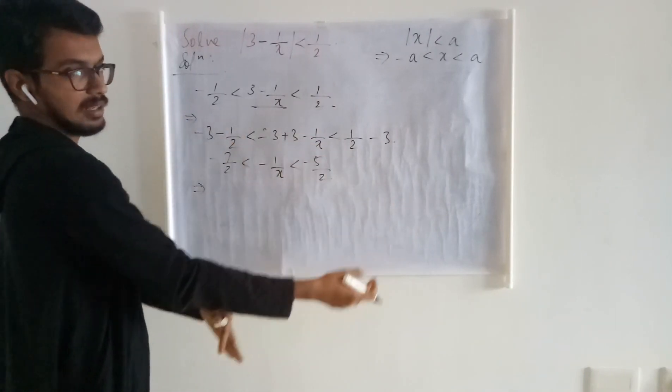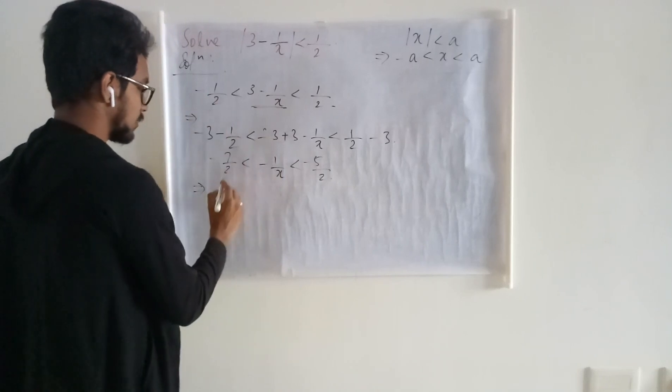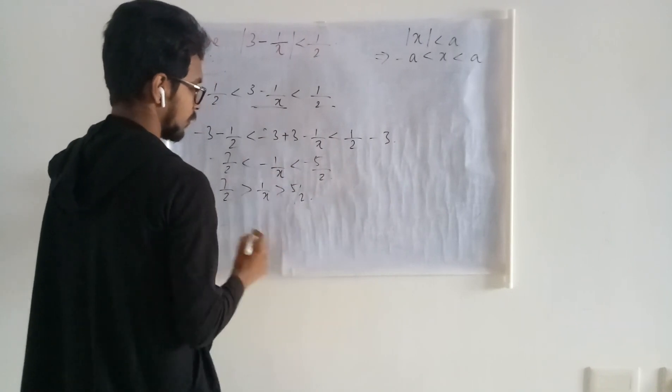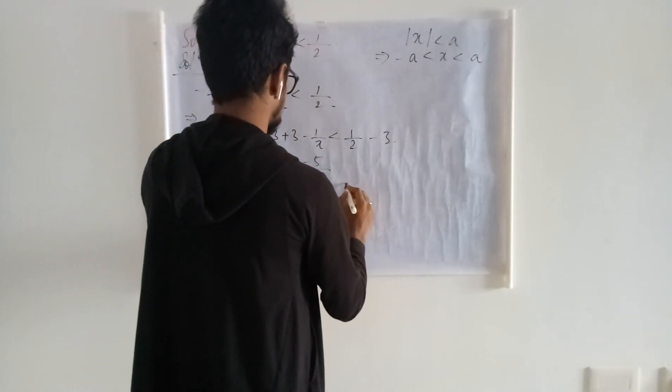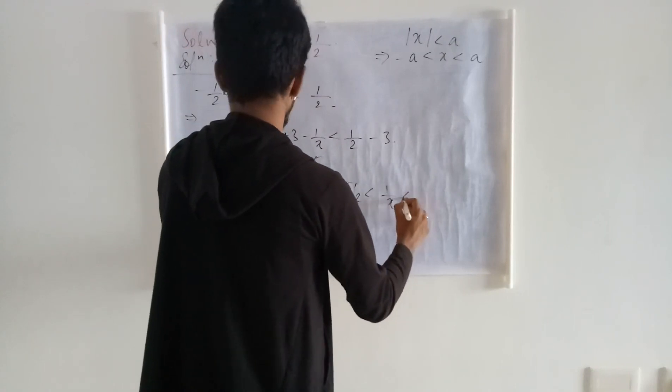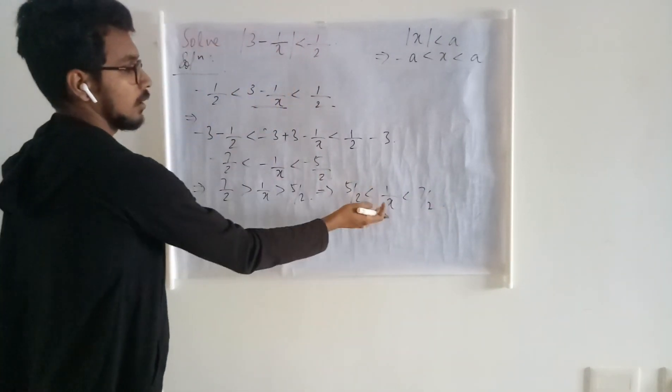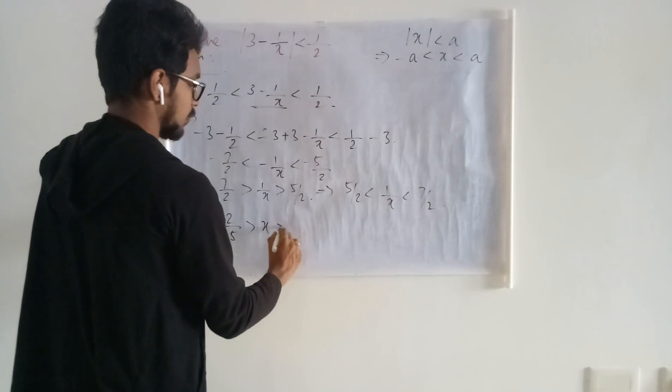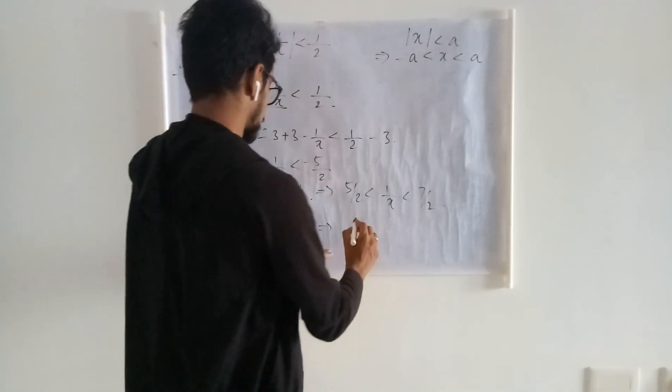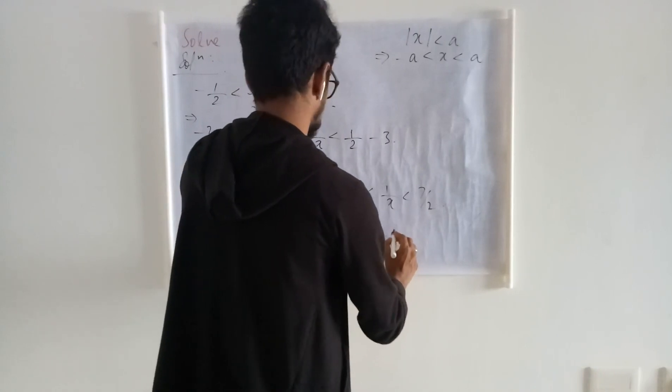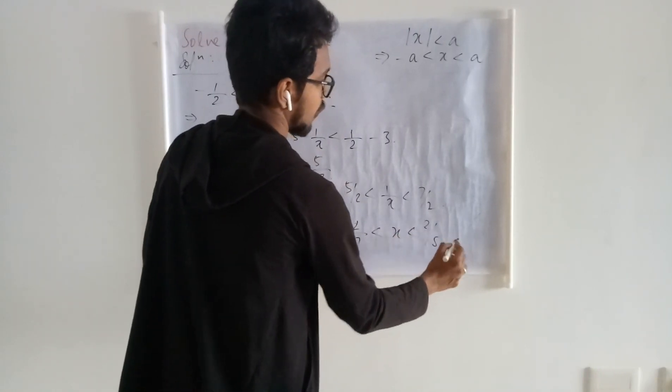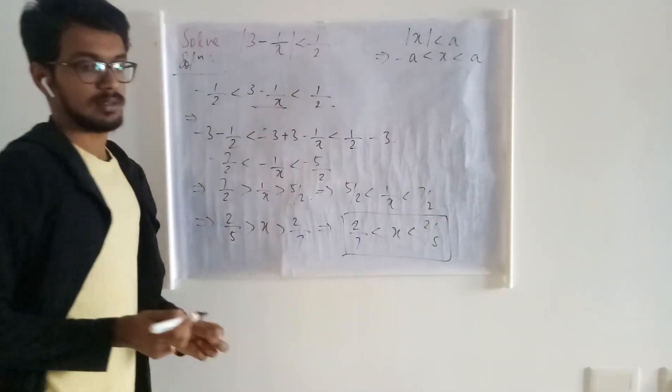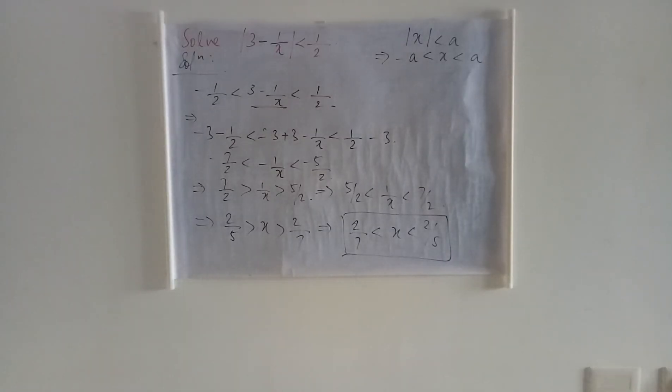When I negate the sides, I am going to get 7/2 is greater than 1/x, which is greater than 5/2. This can be written as 5/2 is less than 1/x, which is less than 7/2. When I take the reciprocal, then that becomes 2/5 is greater than x, which is greater than 2/7. This is 2/7 is less than x, which is less than 2/5. So when you solve the given inequality, you get this.